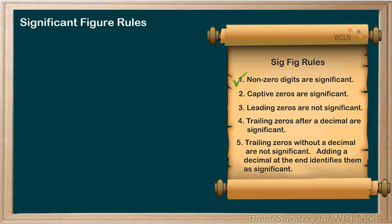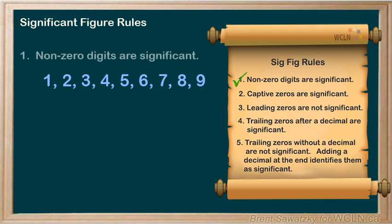The first rule: if someone writes down a number other than zero, then we assume that this number must have meaning. We can assume that scientists don't just randomly write down a two or a five for no good reason. A non-zero digit is always considered to be significant.